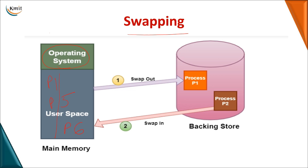When achieving multi-programming, you have many processes present in main memory. At some point, if you want to get a new process — say P2 — into main memory but memory is insufficient, you must take away one of the existing processes. This is called swap out, and the removed process is stored in secondary memory.